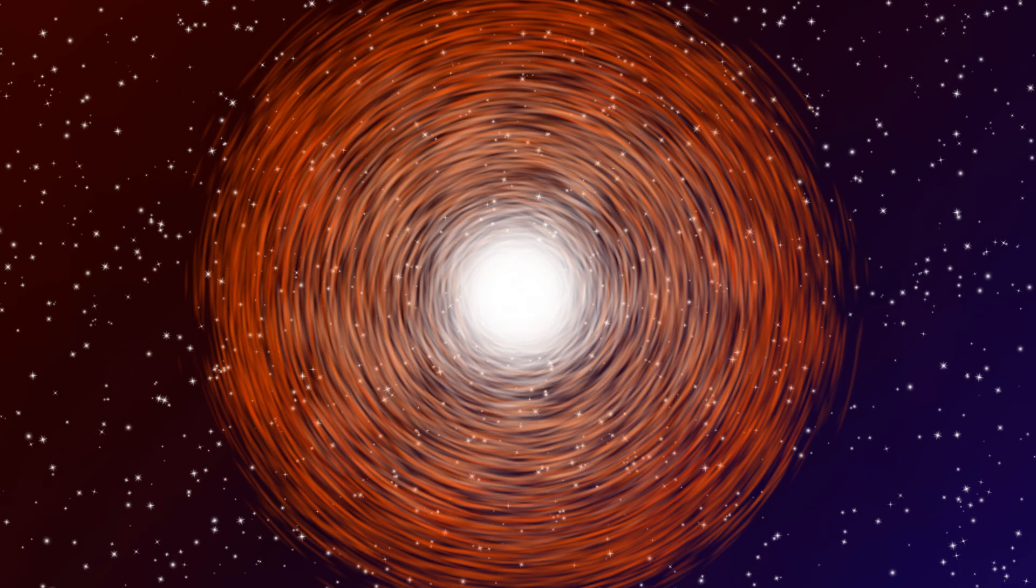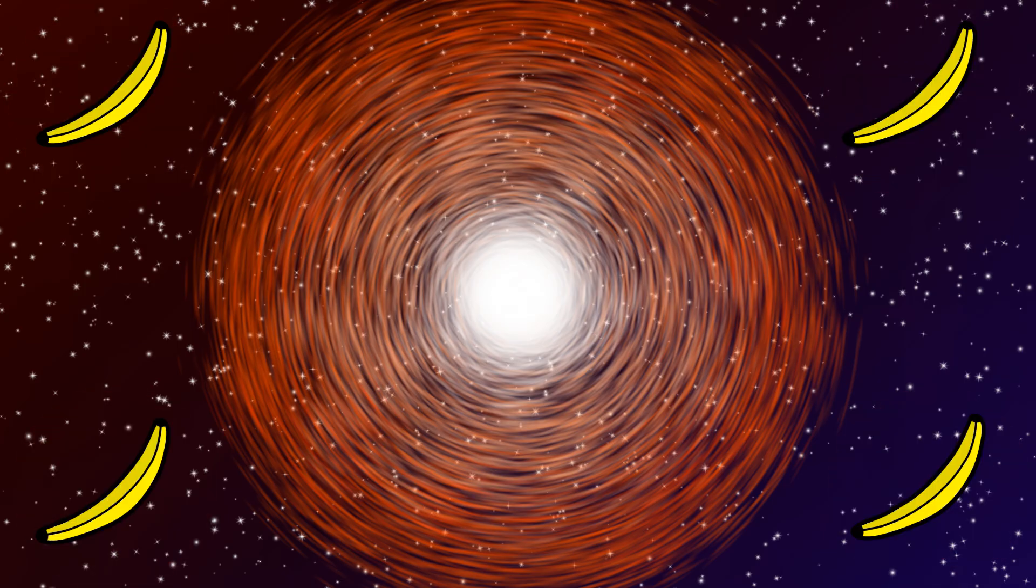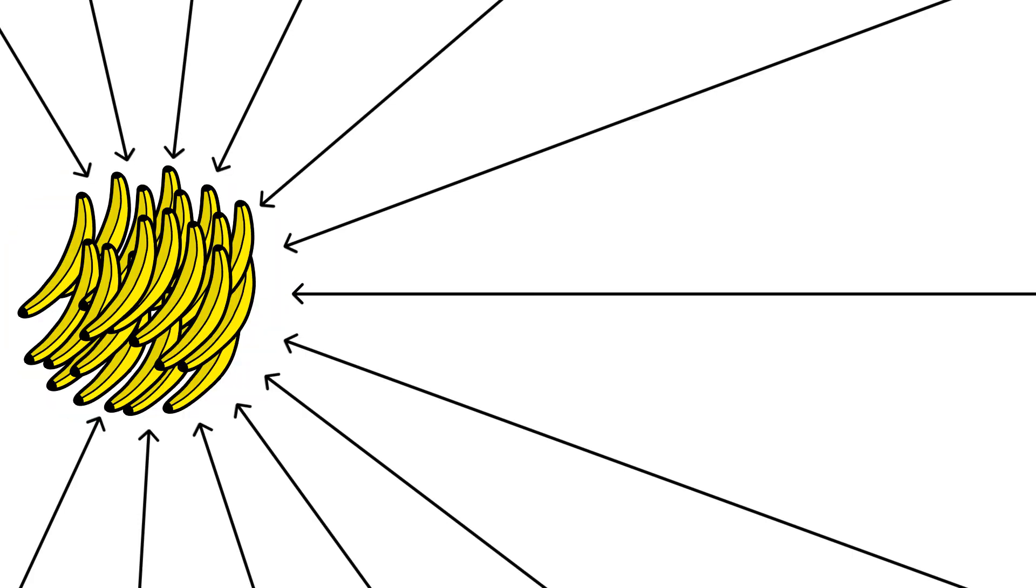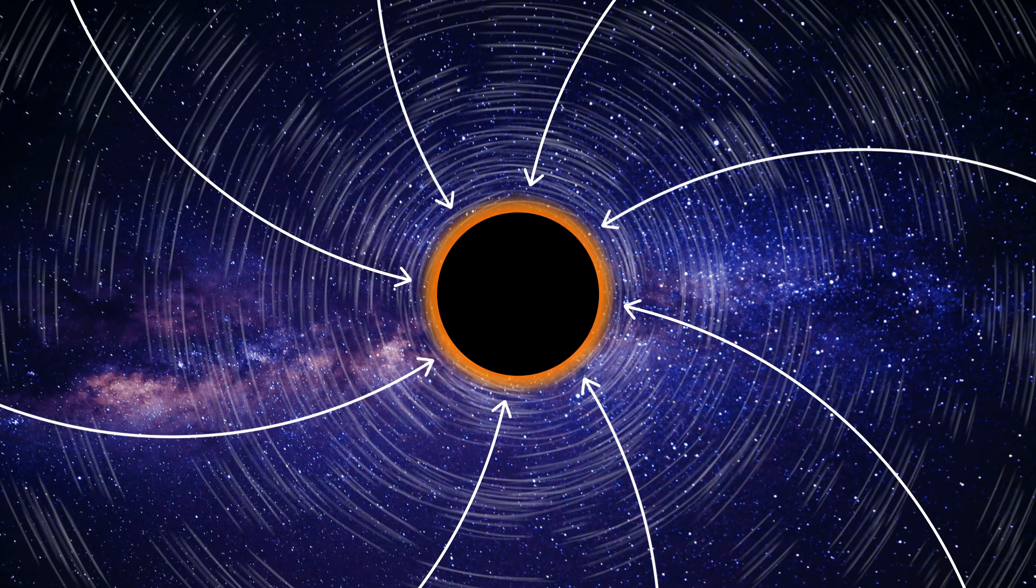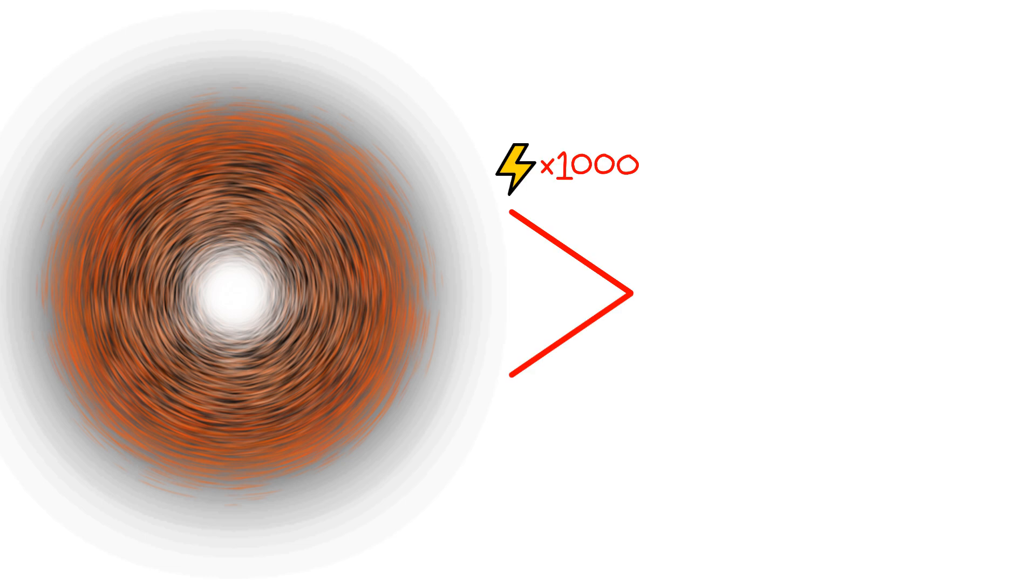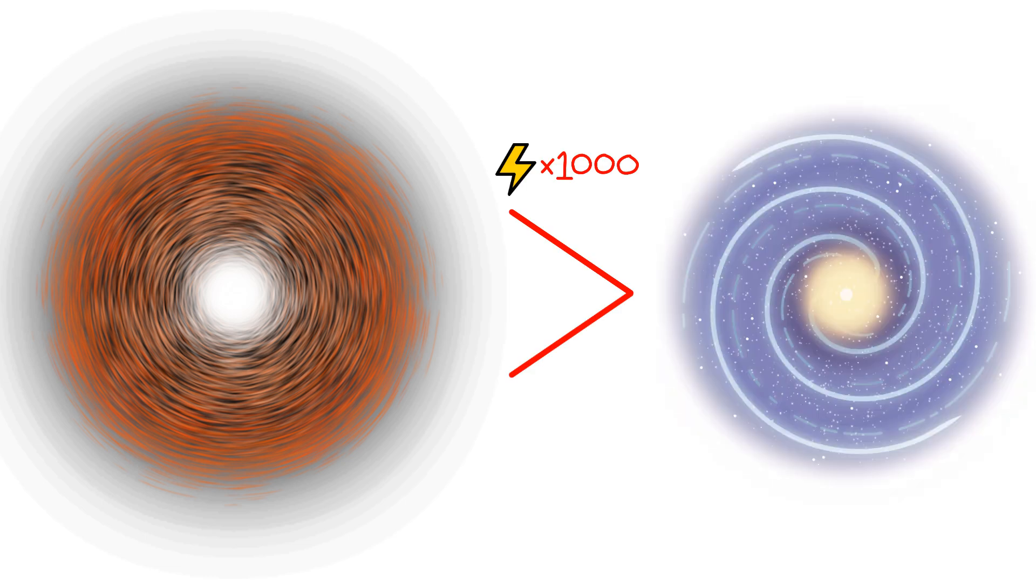But monkey thought Sagittarius A* was scary? That's just a sleepy neighborhood cat compared to quasars—cosmic blowtorches that make supermassive black holes look like gentle banana peelers. Quasars are what happens when a supermassive black hole goes absolutely bananas and starts eating everything in sight. As matter spirals toward the black hole, it heats up to millions of degrees and creates jets of energy that shoot across the universe at nearly the speed of light. These cosmic monsters can outshine entire galaxies. Some release a thousand times more energy than all the stars in the Milky Way combined.